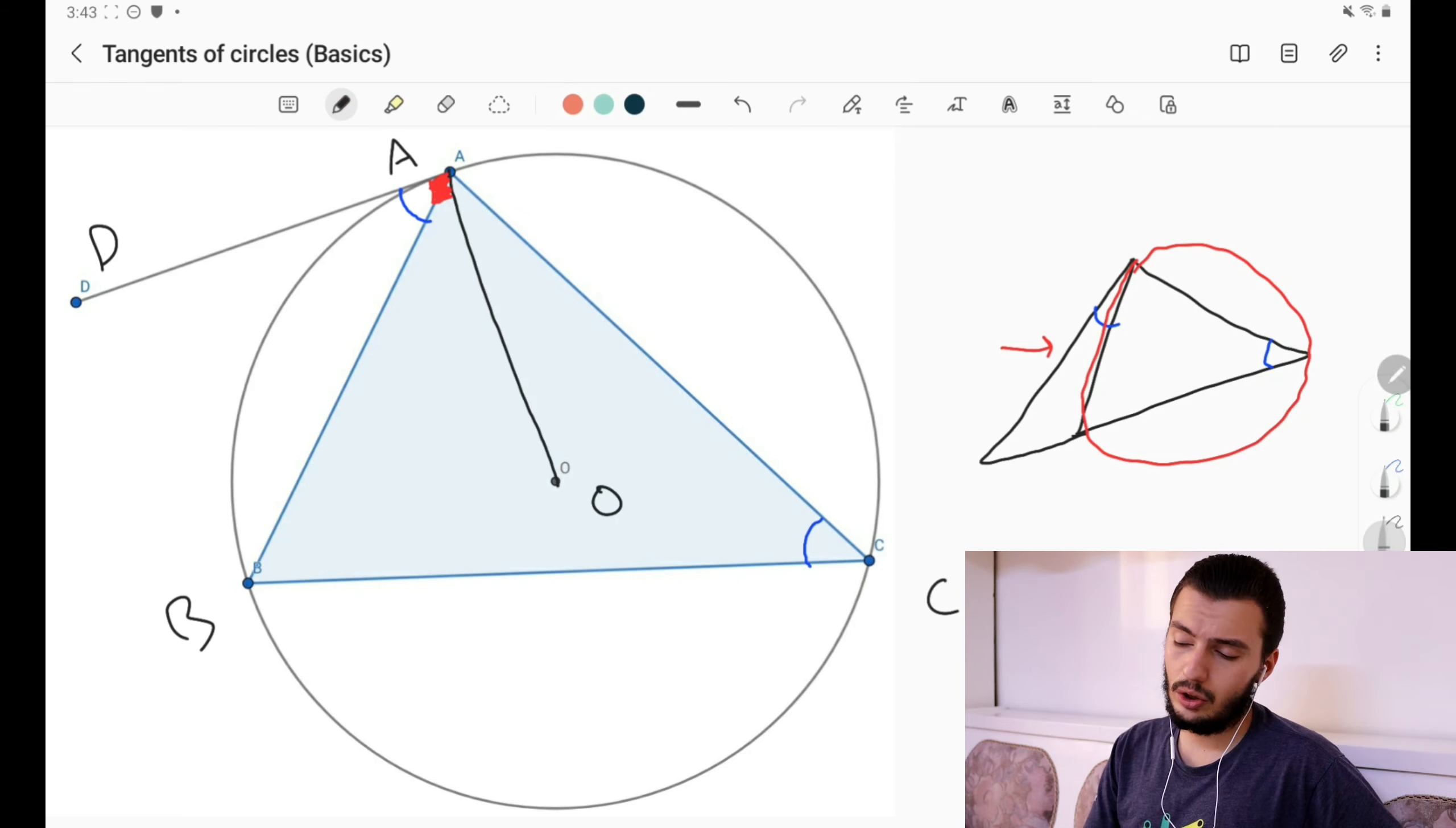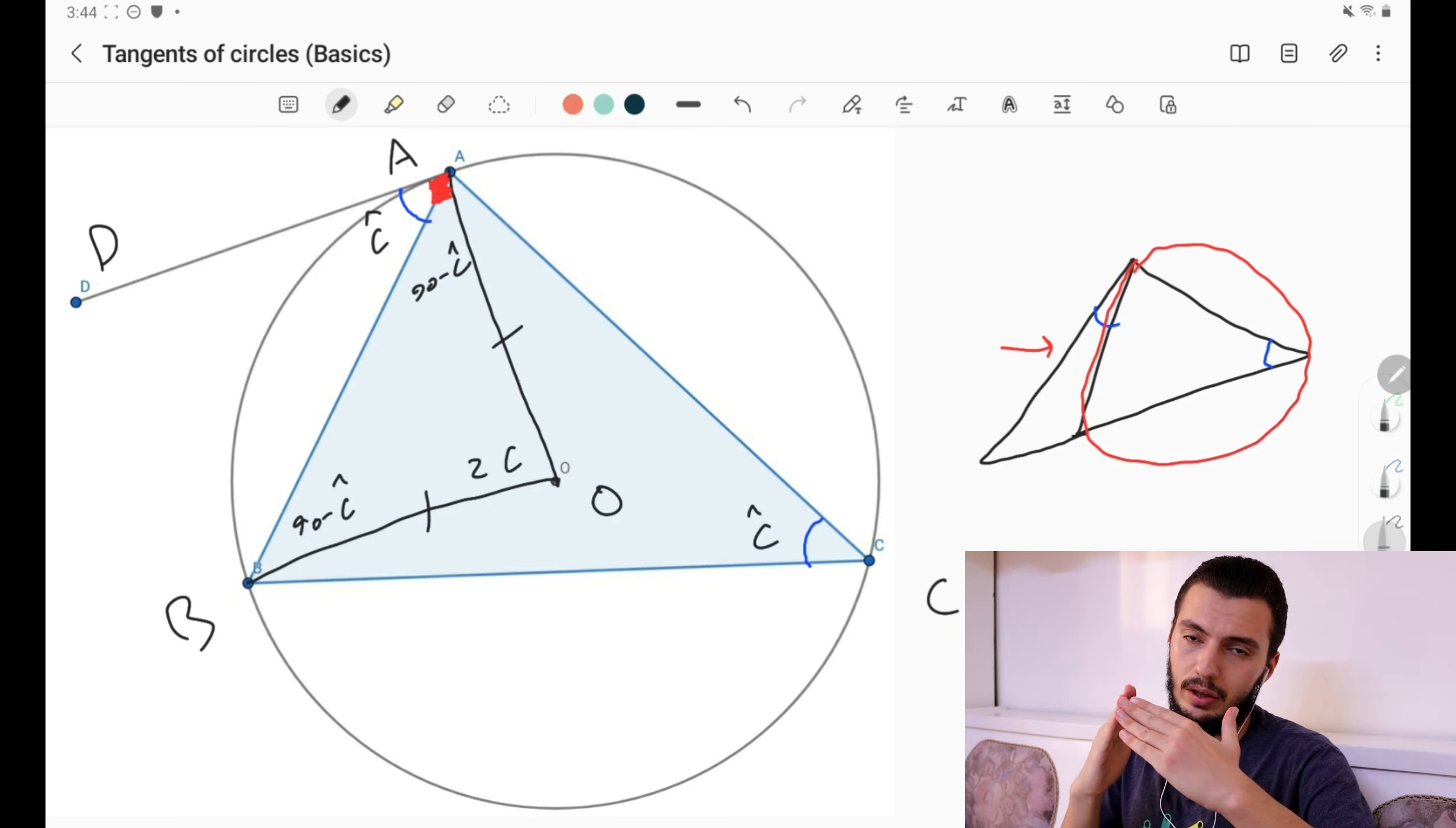Because here O is just the circumcenter of ABC, we can do some angle chasing. This is point C. What is this angle here? This is already C. This is easy to see because we already know this is 2C. So this should be 90 minus C, and this is 90 minus C as well. So we already have that this angle is just 90 degrees. So we have the perpendicularity between OA and this tangent.